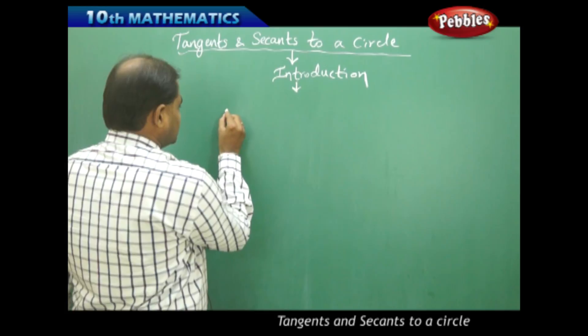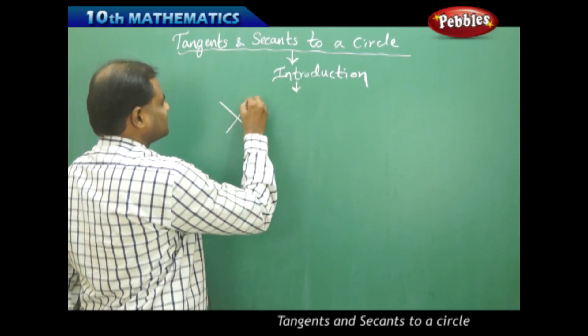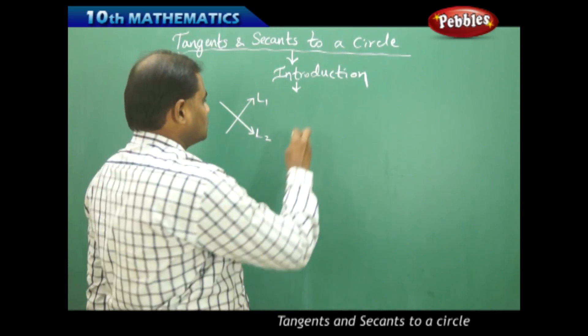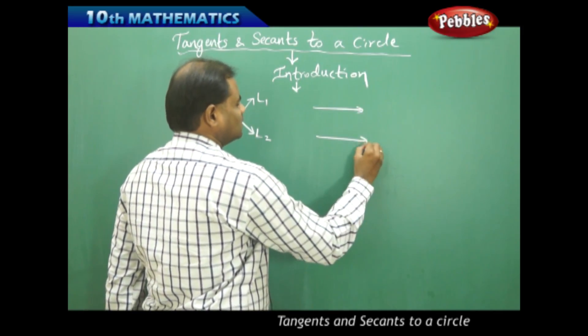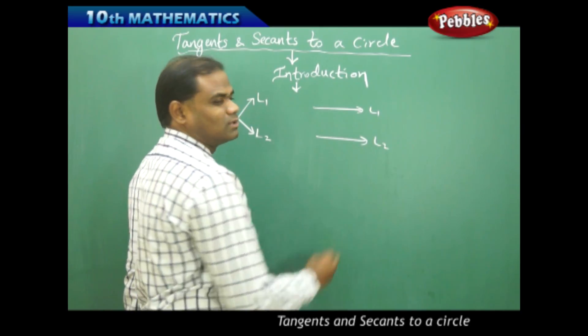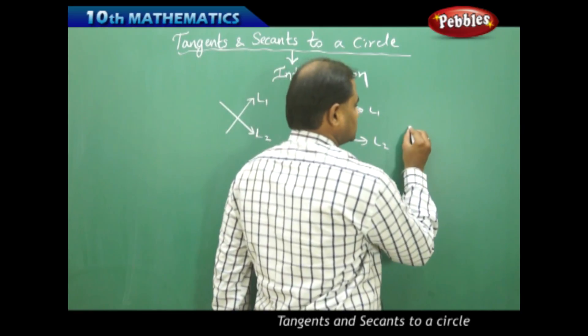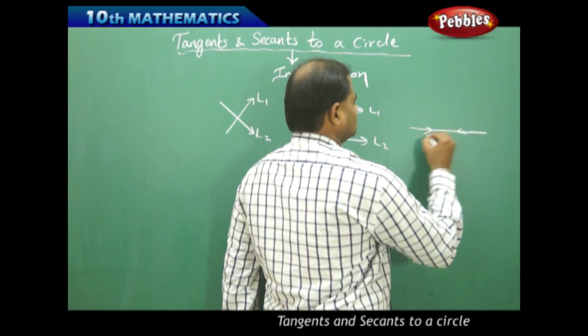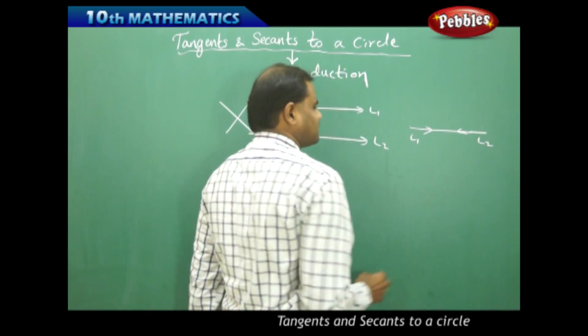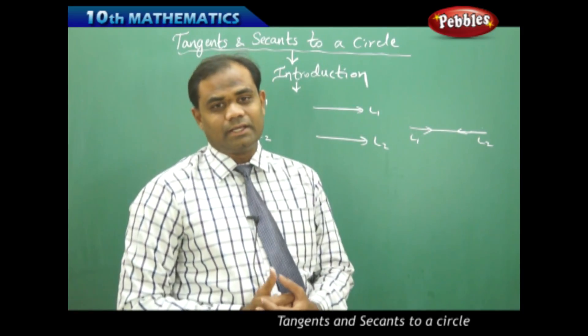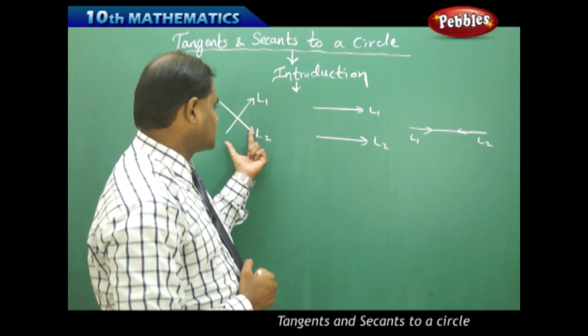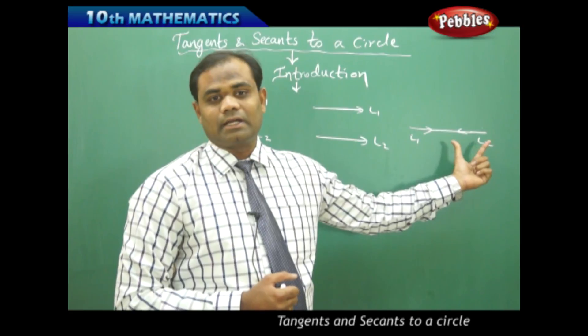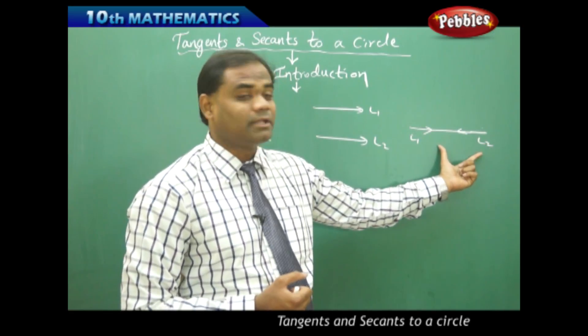Now the straight lines were identified either to intersect, the line L1 is set to intersect L2, or the second possibility was the line L1 was parallel to L2, and the third possibility was that the line L1 and L2 coincide. So there are three different cases we have taken in case of straight lines: either intersecting, or being parallel or non-intersecting, or coincide intersecting at infinitely many points.